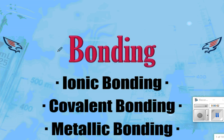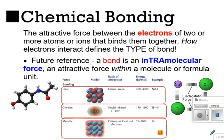Hello and welcome to Bonding 1. This is Ionic, Covalent, and Metallic Bonding. To introduce bonding, I want to talk in general about all bonding types.